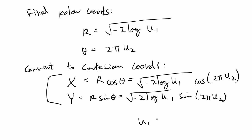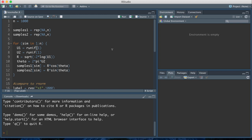So basically, we collect random samples from u1 and u2 and use the Box-Muller transformation to get x and y, which are normally distributed N(0,1). That is the basic idea of the algorithm. In the next part of the video I will go over an R demo.